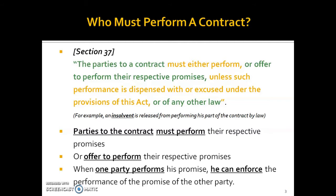For example, if you have a contract worth 10,000 rupees, the parties must be ready to perform or offer to perform their promises. This is also called tender of performance, which we will look at.